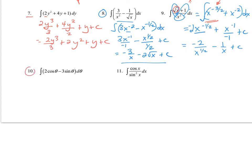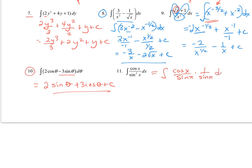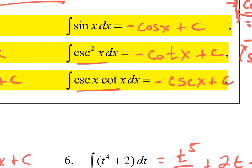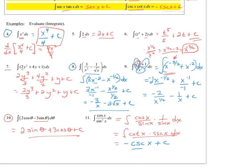For number 10: the antiderivative of cosine is sine, so the 2 goes along for the ride giving 2 sin θ. The antiderivative of negative sine is cosine, so we add 3 cos θ + c. You just have to sort out those negative signs and you'll get used to it. Number 11 looks like a rewrite: writing cosine over sine times 1 over sine, I can see this is cosecant cotangent times cosecant dx. The antiderivative of cosecant cotangent — which is negative cosecant — gives negative cosecant x + c.